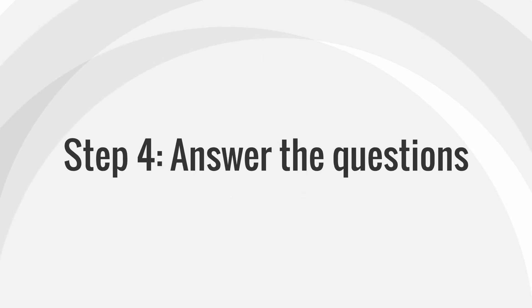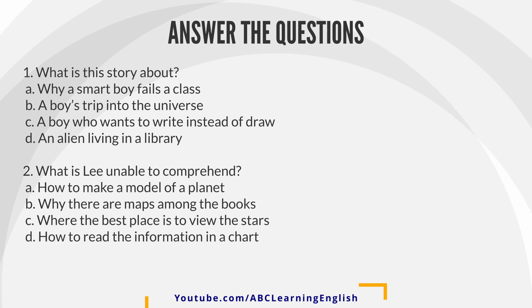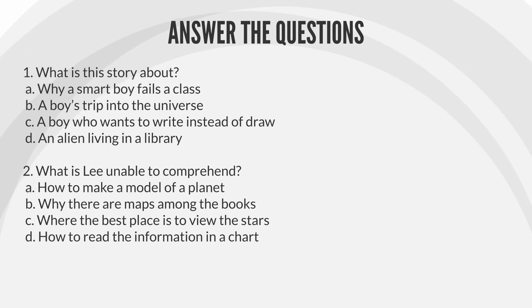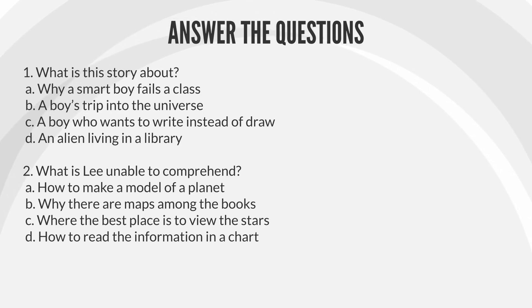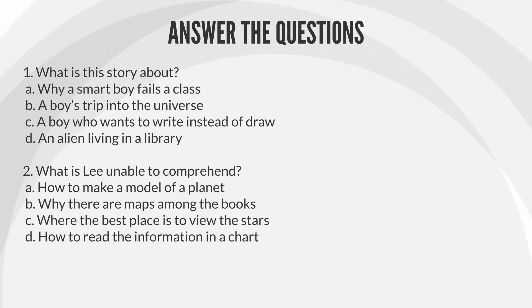Step 4: Answer the questions. Question 1: What is this story about? A. Why a smart boy fails a class. B. A boy's trip into the universe. C. A boy who wants to write instead of draw. D. An alien living in a library.